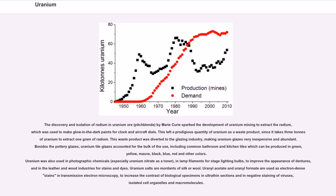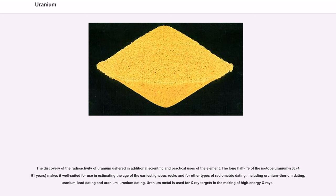Uranium was also used in photographic chemicals, especially uranium nitrate as a toner, in lamp filaments for stage lighting bulbs, to improve the appearance of dentures, and in the leather and wood industries for stains and dyes. Uranium salts are mordants of silk or wool. Uranyl acetate and uranyl formate are used as electron-dense stains in transmission electron microscopy to increase the contrast of biological specimens in ultrathin sections and in negative staining of viruses, isolated cell organelles and macromolecules. The discovery of the radioactivity of uranium ushered in additional scientific and practical uses of the element. The long half-life of the isotope uranium-238 makes it well-suited for use in estimating the age of the earliest igneous rocks and for other types of radiometric dating, including uranium-thorium dating, uranium-lead dating and uranium-uranium dating.